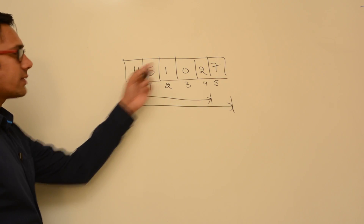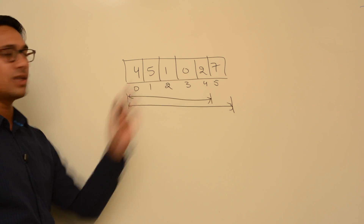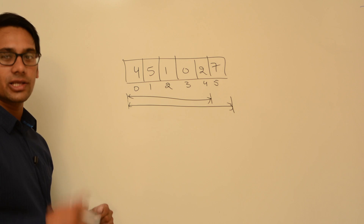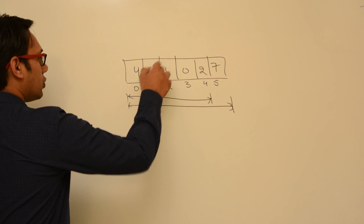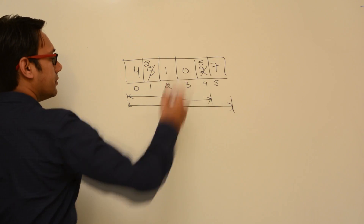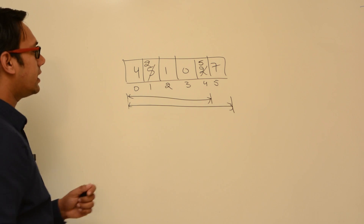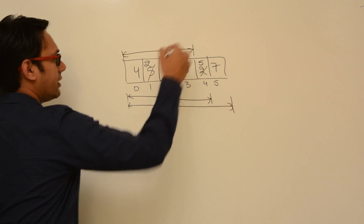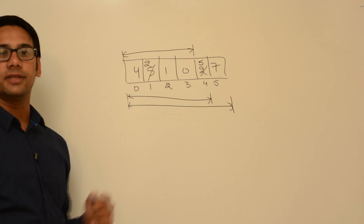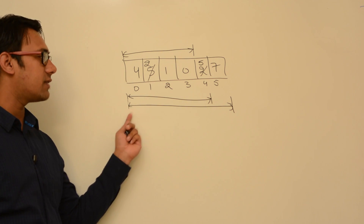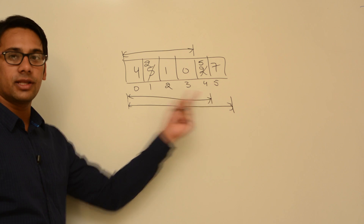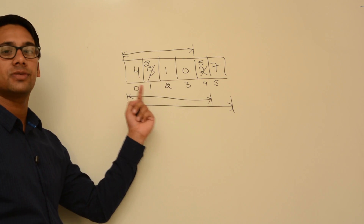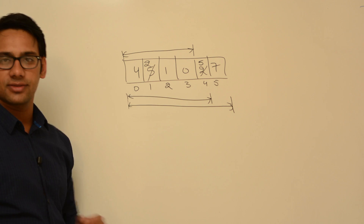Now search what is the maximum data from index 0 to 4. The maximum data is 5, and then you are going to swap the maximum data to the last location. So 2 will come here and 5 will go there. Every step, the size of the array is decreasing. Initially the size was n, then n minus 1, then n minus 2, then n minus 3.